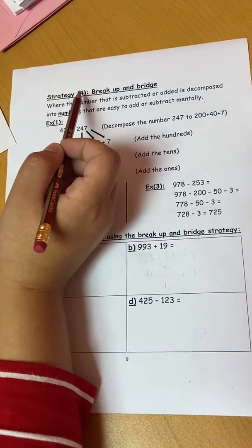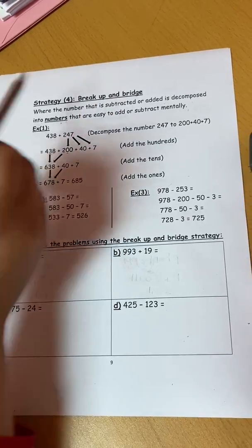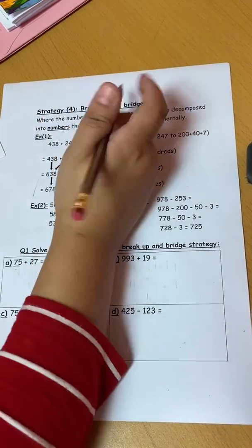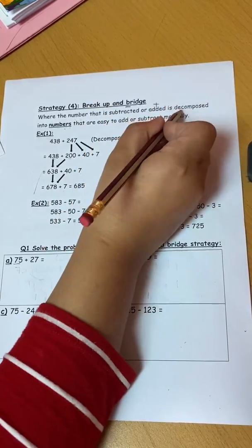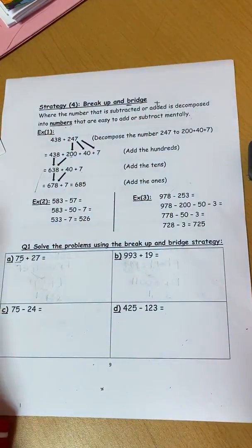Good morning, Junior 4. Today we are going to discuss this fourth strategy which is called Break up and Bridge. What is this strategy? Where the number that is subtracted or added is decomposed into numbers that are easy to add or subtract mentally.